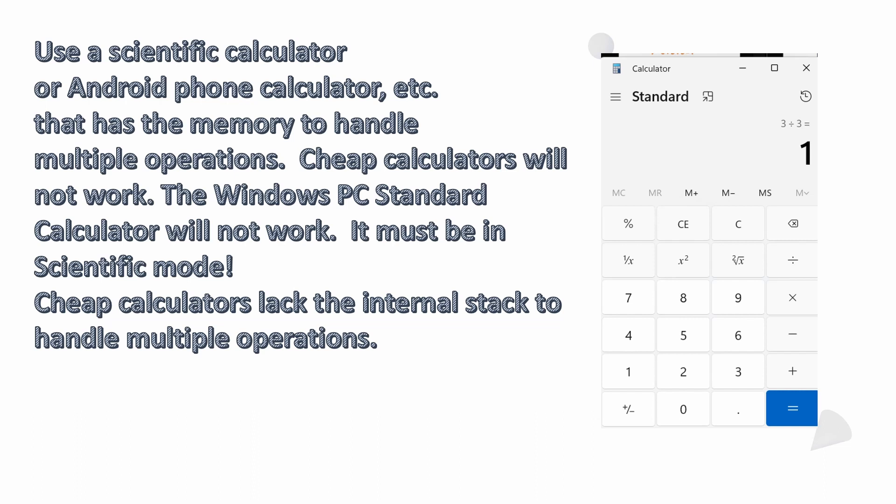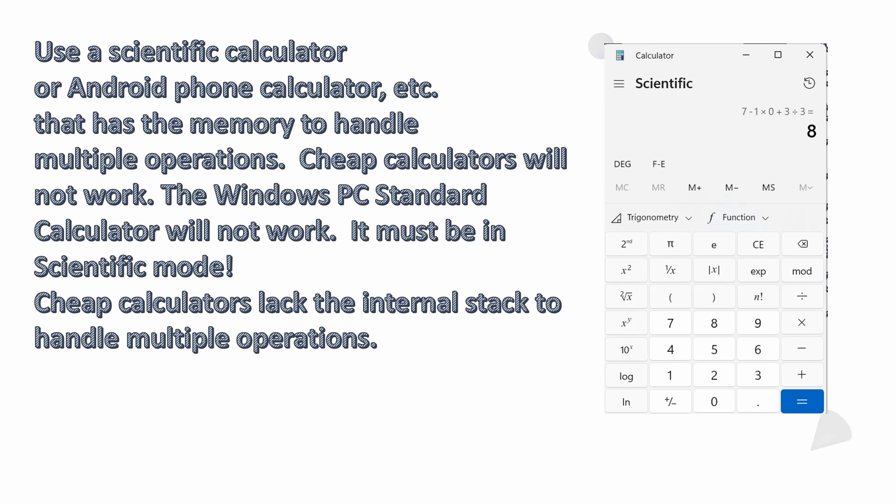It's really frustrating because in Windows this is the default calculator that you're probably going to have unless you go up and hit the little hamburger menu—the three little horizontal lines—and change it from standard over to scientific. Cheap calculators and this Windows PC standard calculator don't have the internal stack to handle multiple operations. So here in this example you see that I switched it over on my computer to scientific mode, and when I do that I get the correct answer of 8, because it's keeping track of 7 - 1 × 0 + 3 ÷ 3. It's able to handle the order of operations, so there is a big difference.